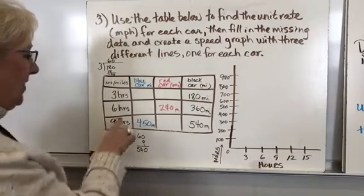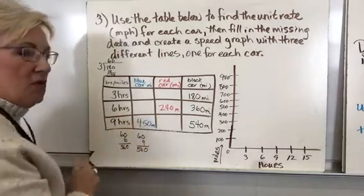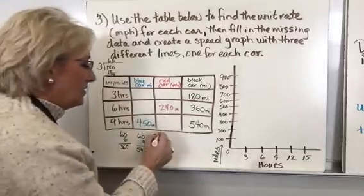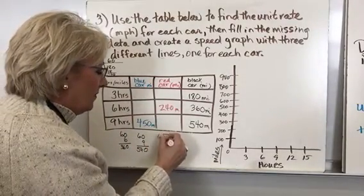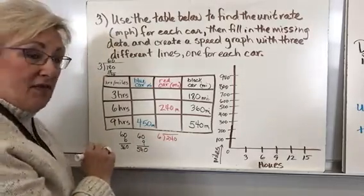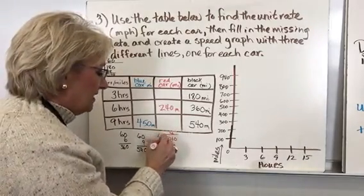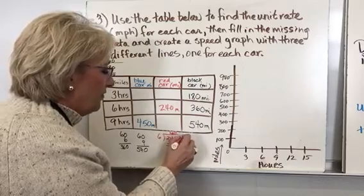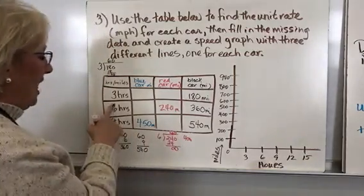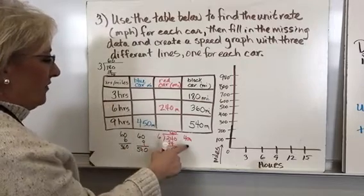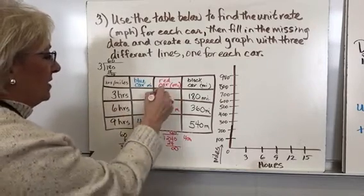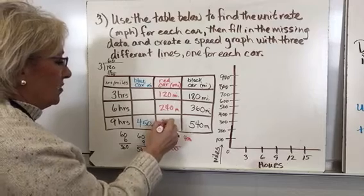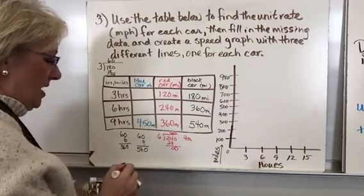Looking at the red car — the only data I have is that in six hours it can go 240 miles. So I divide 240 by six: six goes into 24 four times, with nothing left over, then bring down the zero. The red car is going 40 miles per hour. So three times 40 gives 120 miles, and nine times 40 gives 360 miles.